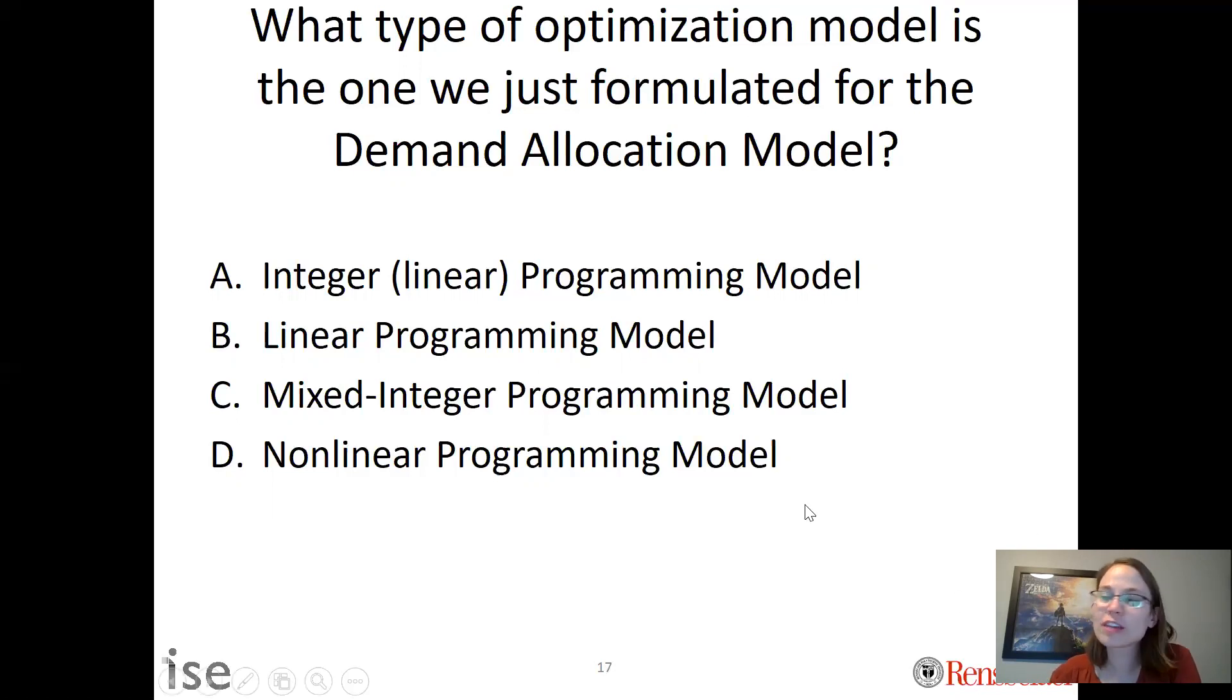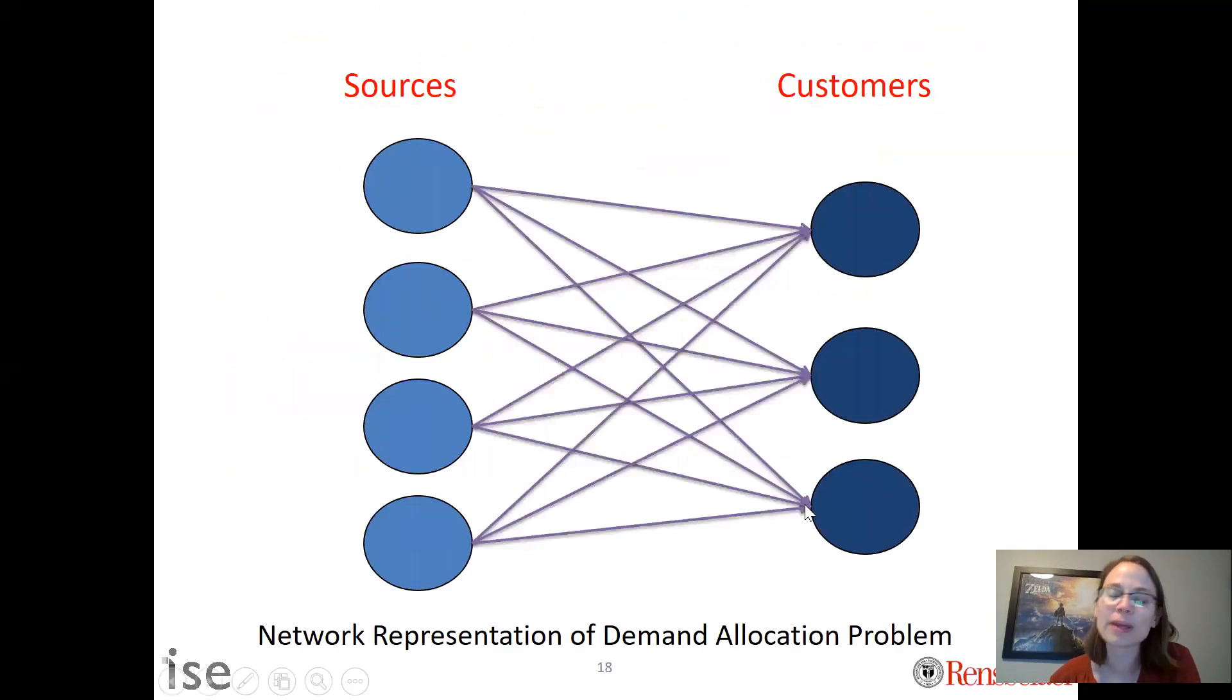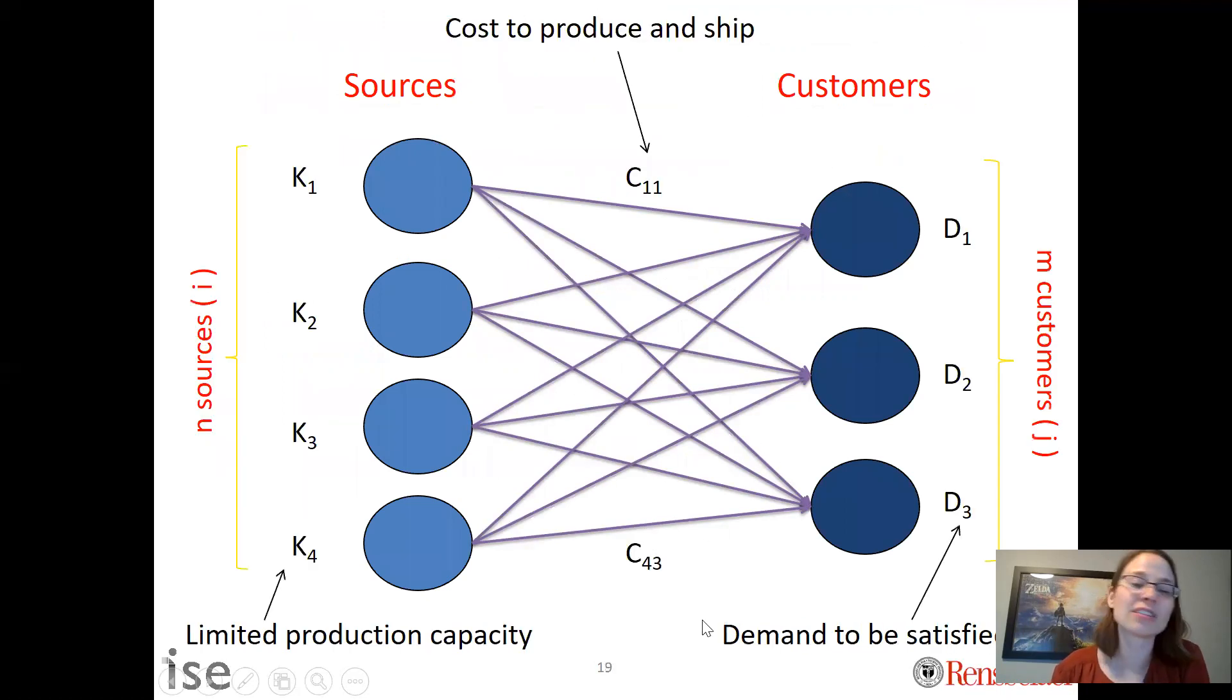We can also think of this problem in network form. What are we doing? We are given sources and customers, and we're given the cost on the arcs—that's the cost Cij. We're also given the capacities of each of the sources and the demands of each of the customers. So we can think about this from a network optimization perspective as well.